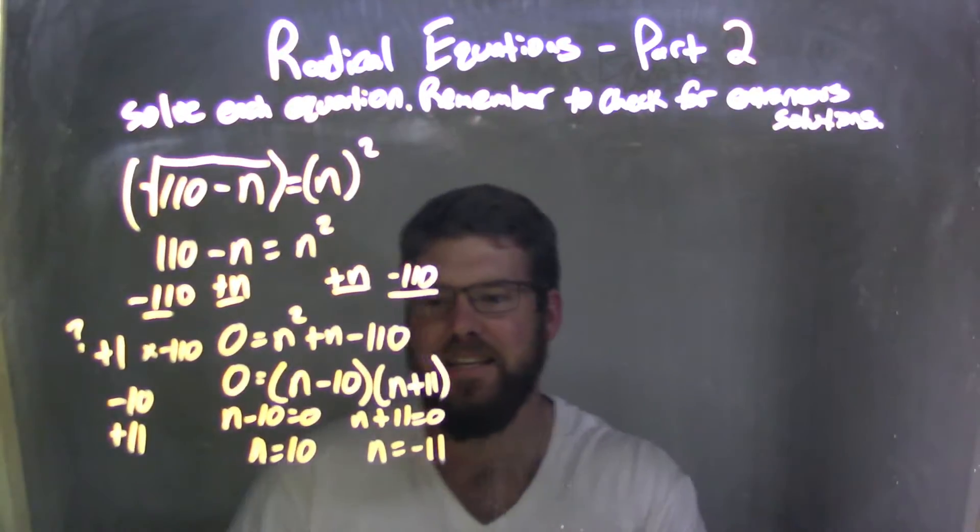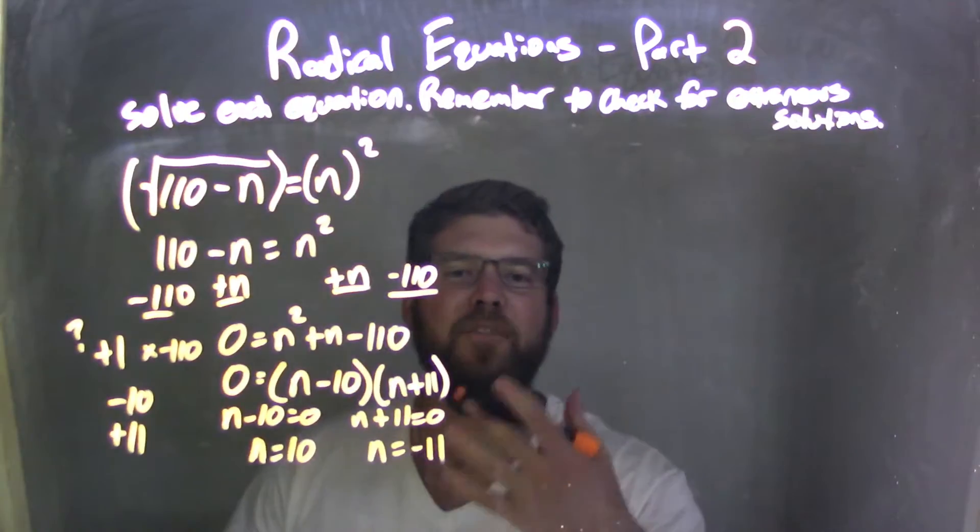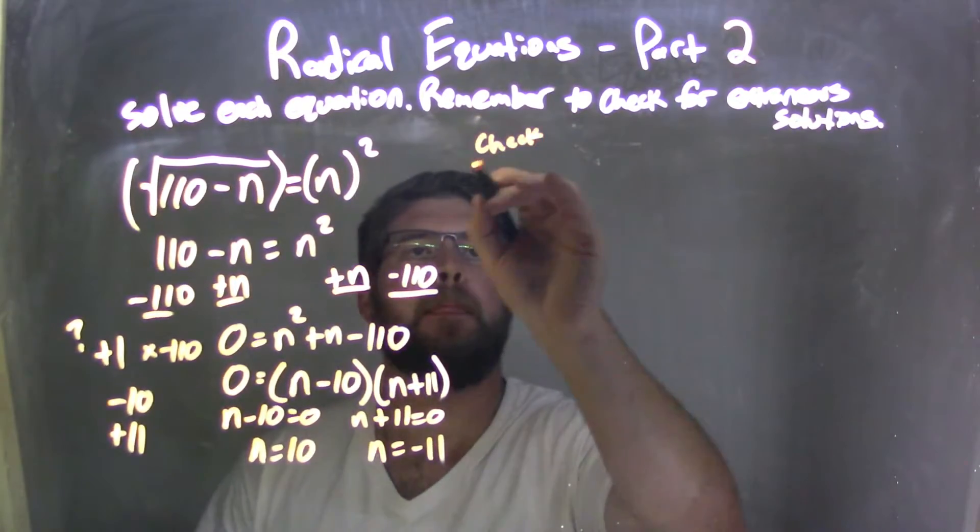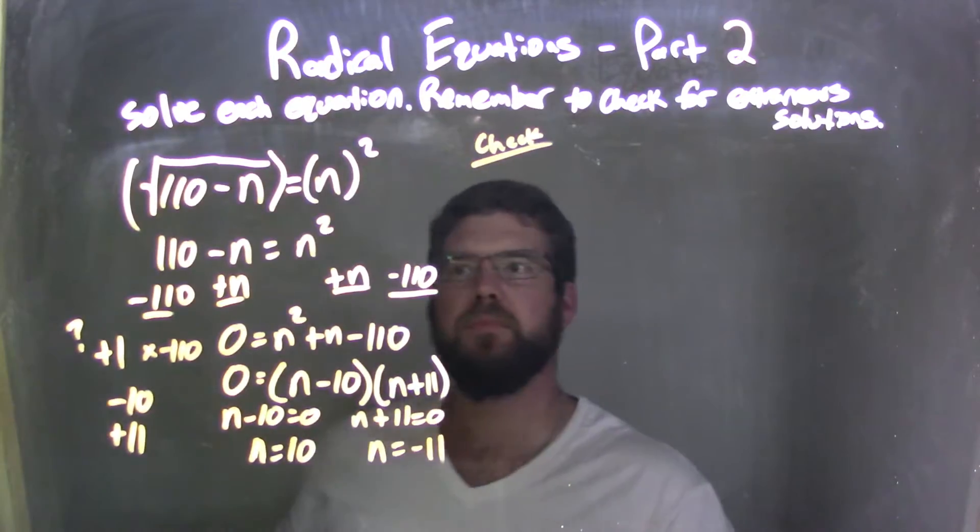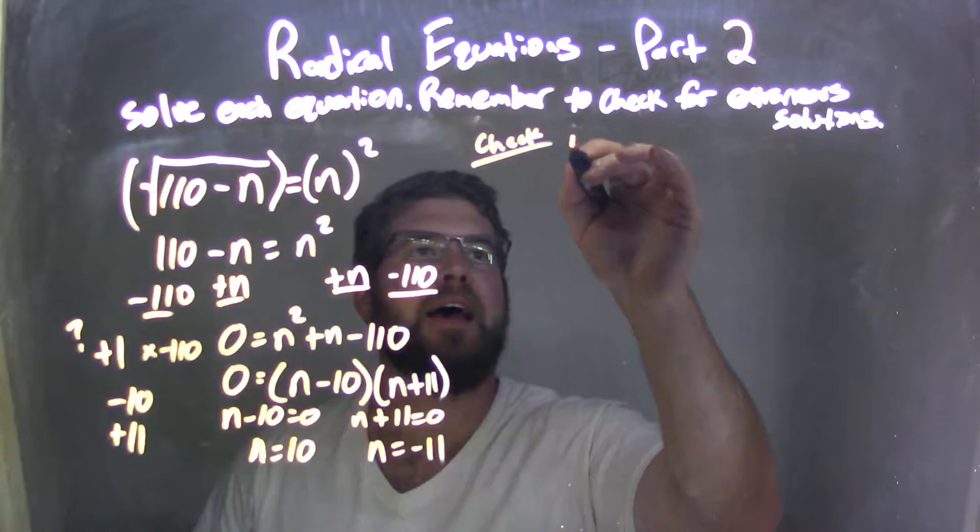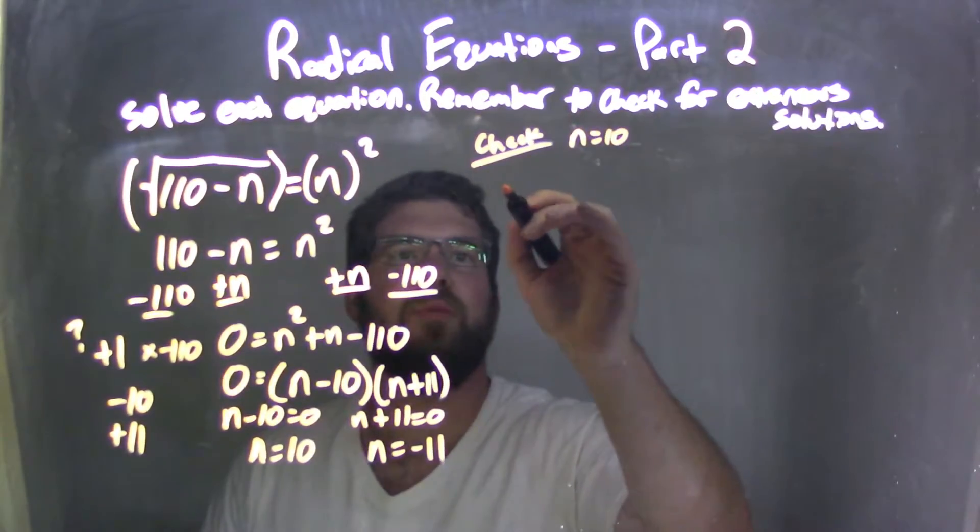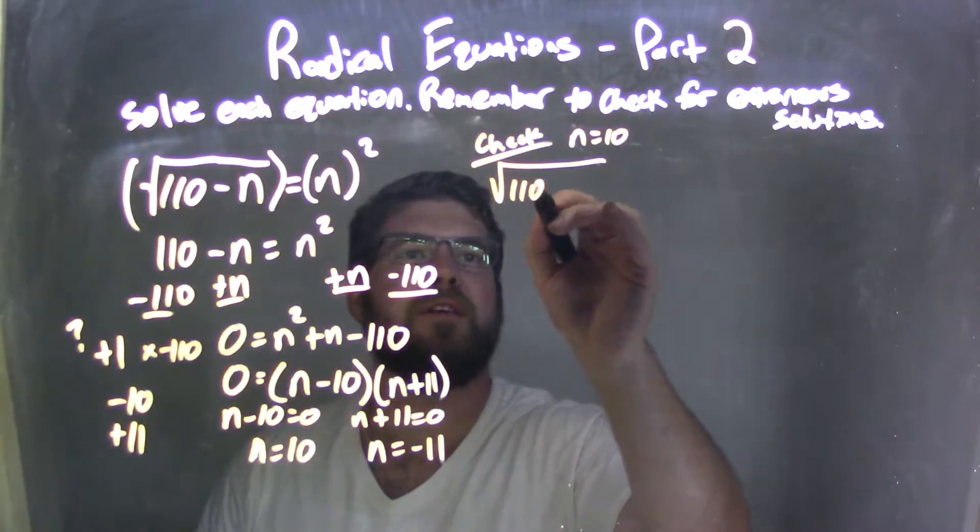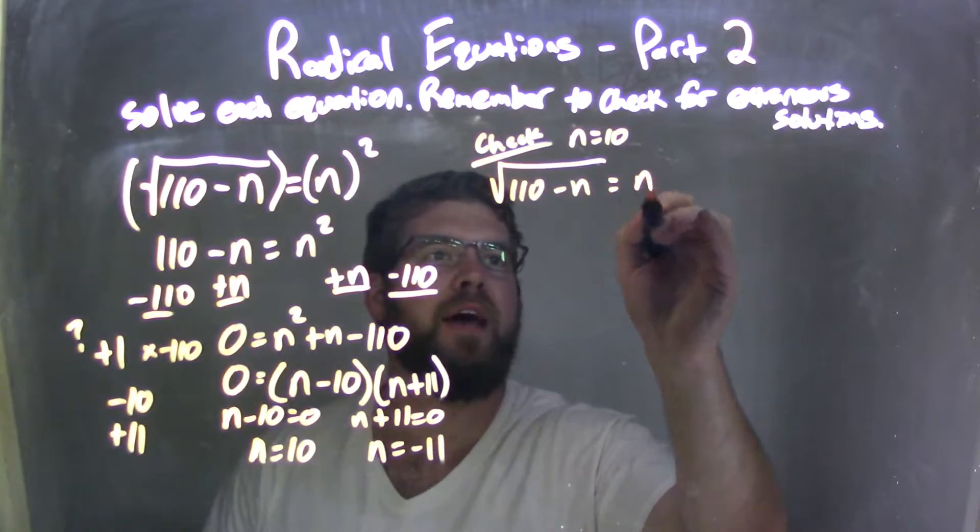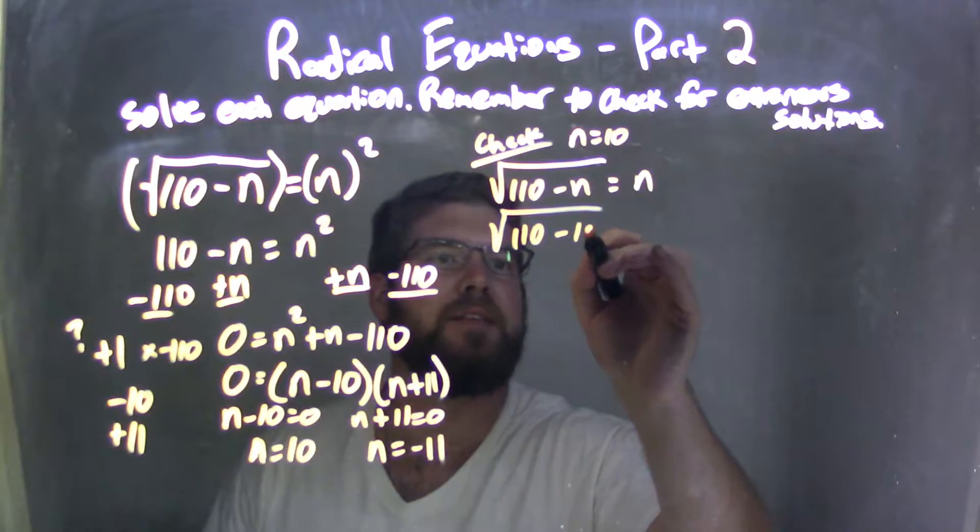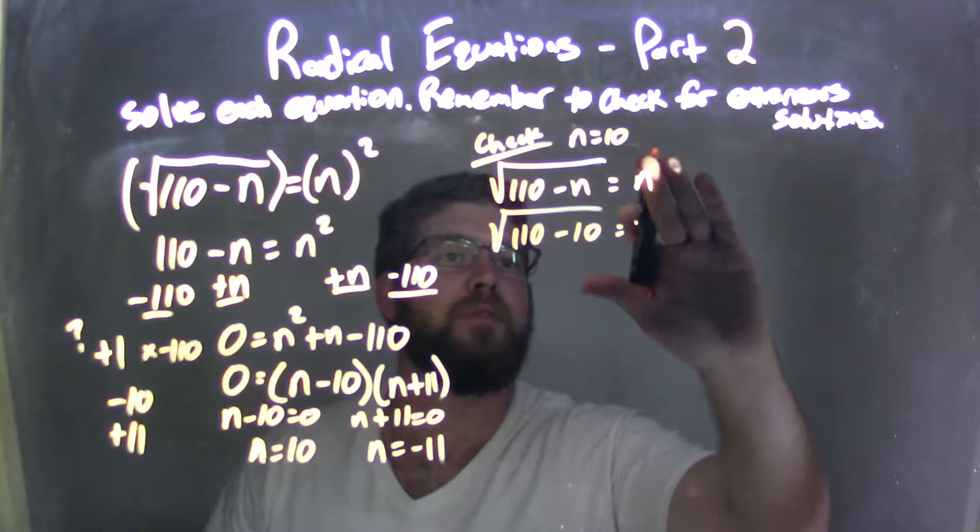So, here's my check. Let's go check. I have to plug both into our original equation, so let's do n equals 10 first, and I'll plug 10 in and see if it's a true statement. So I have the square root of 1/10 minus n equals n, plug 10 in.